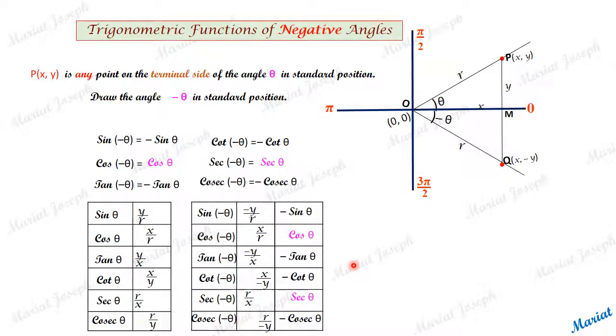They are: sin minus theta is minus sin theta, cos minus theta is cos theta, tan minus theta is minus tan theta, cot minus theta is minus cot theta, sec minus theta is sec theta, cosec minus theta is minus cosec theta. It is easy to remember.